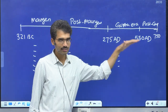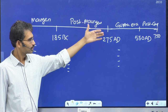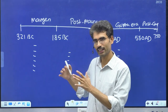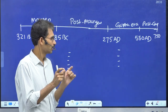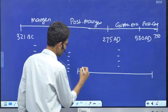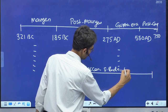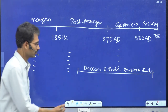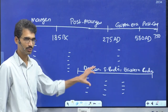Most of these historical developments were taking place in northern India, but there were also significant developments in South India, Deccan, and Eastern India. UPSC clearly mentions that we need to focus on historic developments in Deccan, South India, and Eastern India as well — not just the northern narrative.